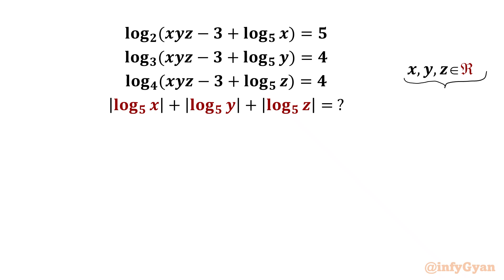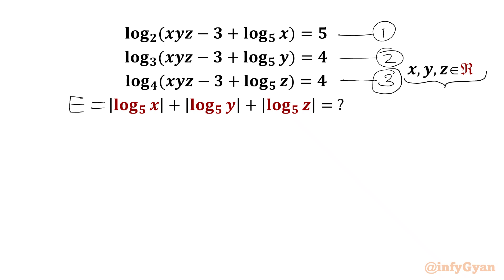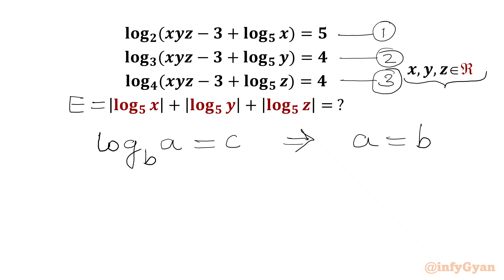Let's get started by considering this as equation 1, equation number 2, and equation number 3. The required expression is supposed to be E. Now we will write the log form to exponent form conversion. We know that log a with base b equal to c in log form — converting to exponent form we write a equal to b power c.